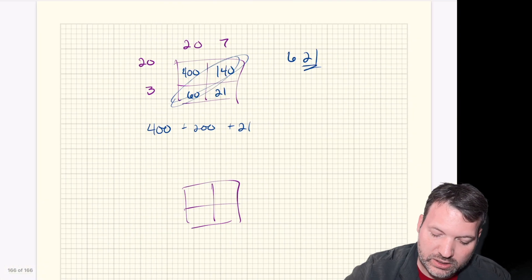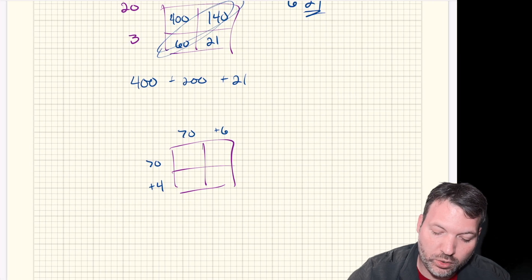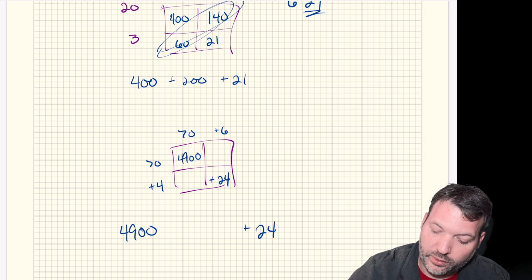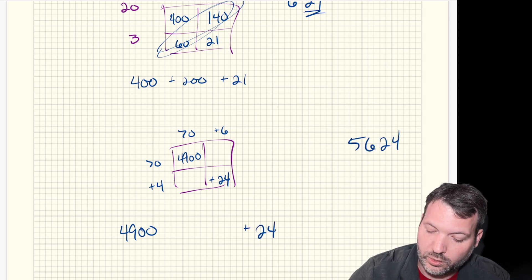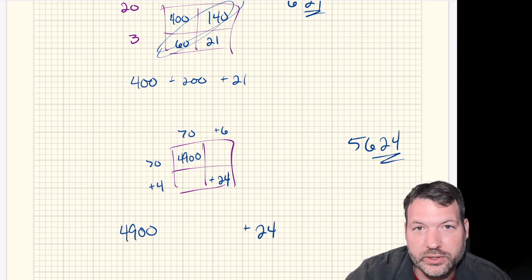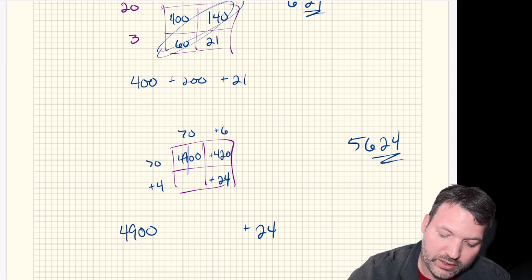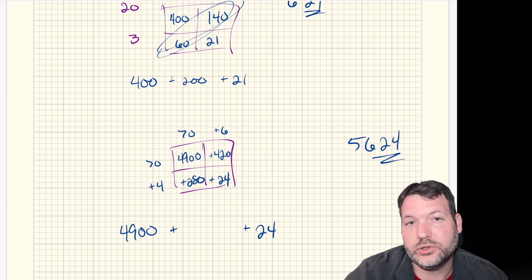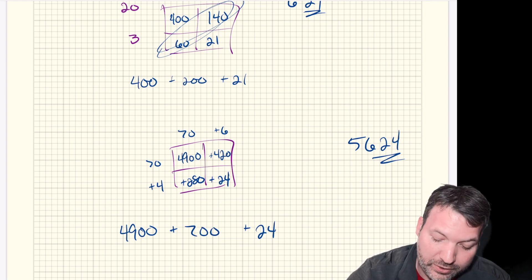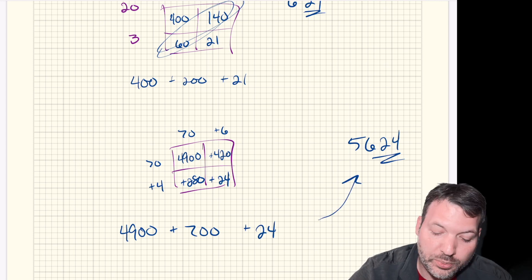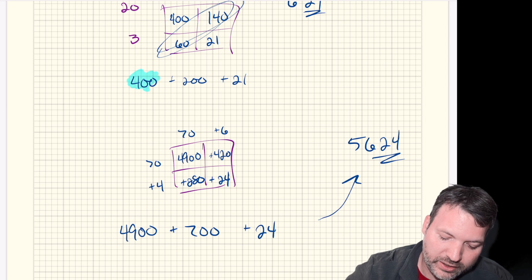Let's try 74 times 76. The 70 times 70 is 4900. The 6 times 4 is 24 — anticipating that's where the 24 in 5624 comes from. The other two boxes: 70 times 6 is 420, and 70 times 4 is 280. It just so happens that 420 plus 280 is 700. So 4900 plus 700 plus 24 gives 5624.